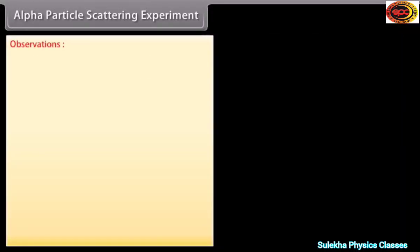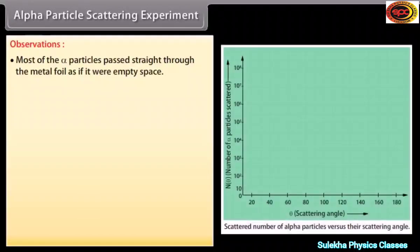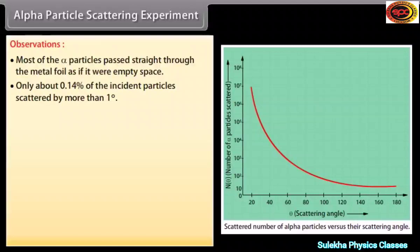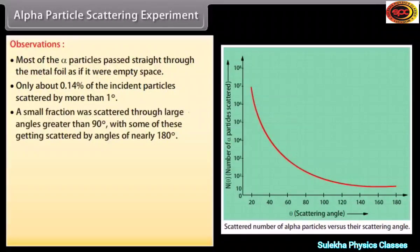Observations: Most of the alpha particles passed straight through the metal foil as if it were empty space. Only about 0.14% of the incident particles were scattered by more than 1 degree. Small fractions were scattered through large angles greater than 90 degrees, with some getting scattered by angles of nearly 180 degrees.